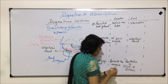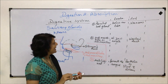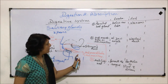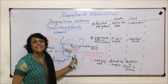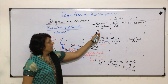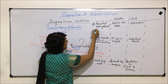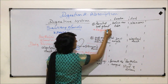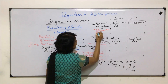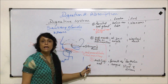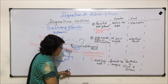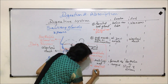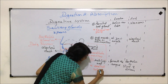A few more important things about these glands: we have seen their location and the place where these ducts open. The parotid salivary gland is the largest salivary gland, and the sublingual is the smallest salivary gland.